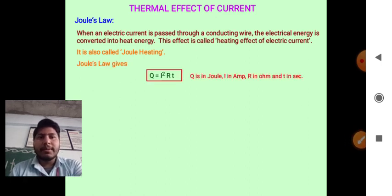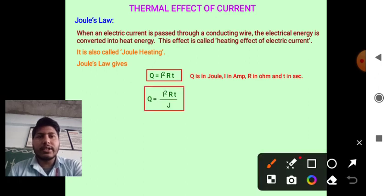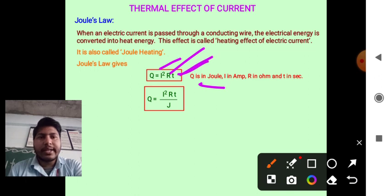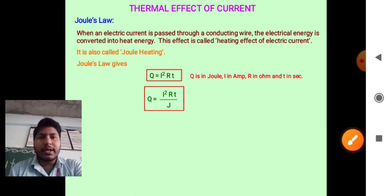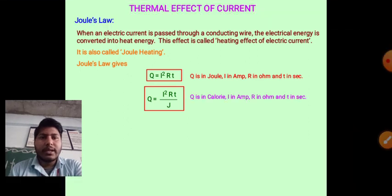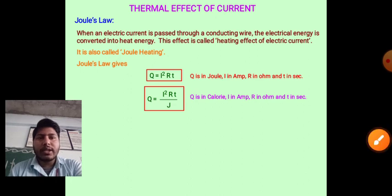Mathematically, Joule has given us Q is equal to I squared RT, where Q is in Joules. Q is equal to I squared RT by J, where I is the current in ampere and Q is the heat in calories.